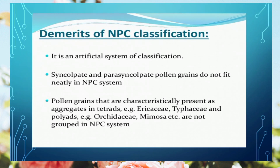With the help of NPC and morphological features, we can identify many pollen grains and spores and determine which genus or species they belong to. Now briefly discussing the demerits of NPC classification: as discussed in its definition, one drawback is that in families like Araceae, Typhaceae, Polyad families — with examples of species like Orchidaceae, Mimosa — their pollen and spores cannot be grouped using NPC, so these are some drawbacks.